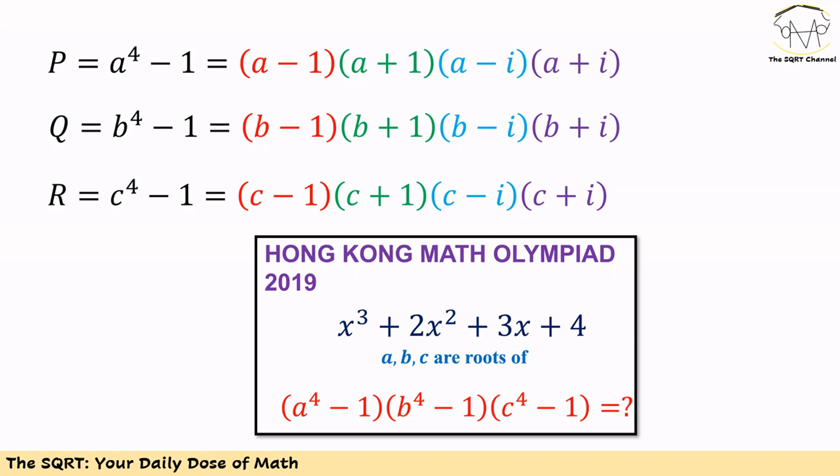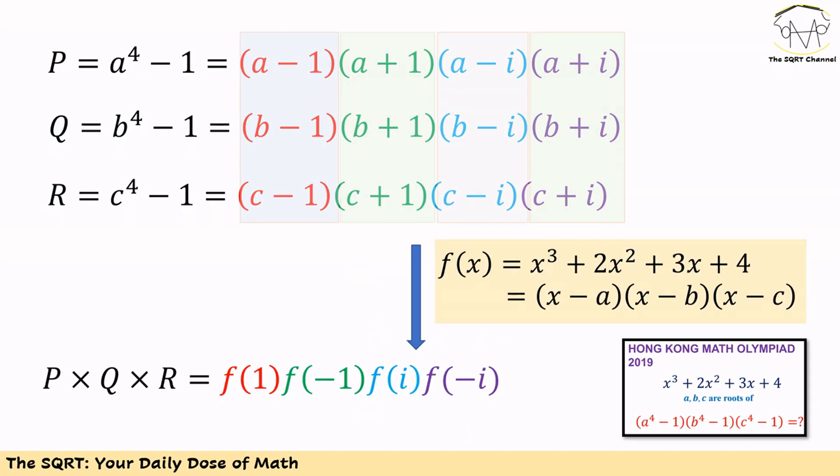Here we write a to the power of 4 minus 1 as p, b to the power of 4 minus 1 as q, and c to the power of 4 minus 1 as r, to simplify the problem a little bit more. Before taking further steps, let's review the expression that we had: x cubed plus 2x squared plus 3x plus 4, where a, b, c are roots. Let's use f(x) for this expression.